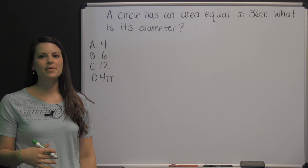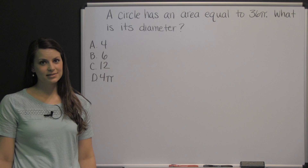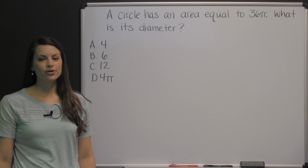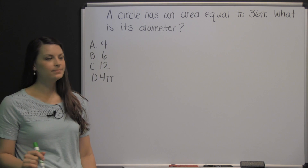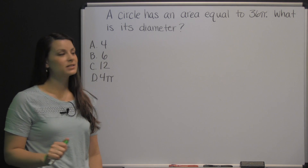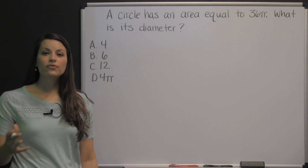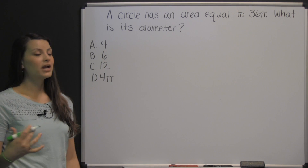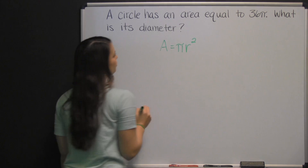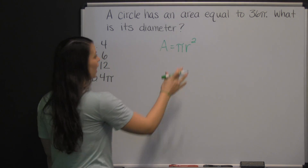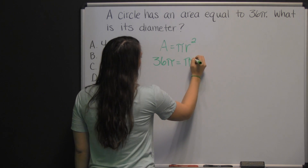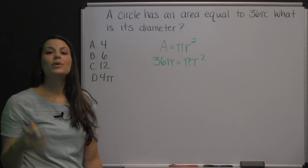This is a question from the applied mathematics section of a TABE practice test. On the TABE exam, you will be allowed to use a four-function calculator only on the applied mathematics section. Let's look at this problem: A circle has an area equal to thirty-six pi. What is its diameter? First, we need to start with the formula for area of a circle, which is: area equals pi times the radius squared.